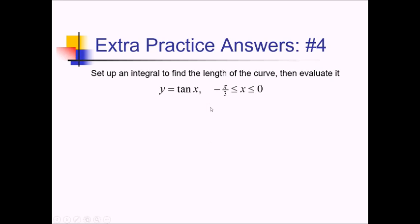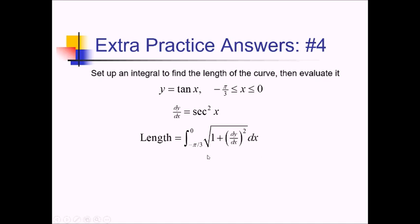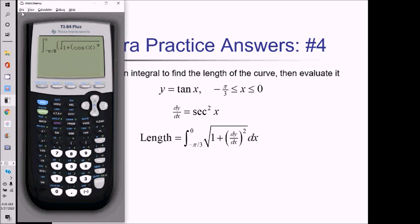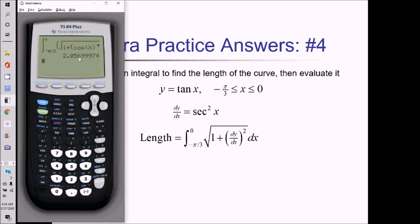On this problem, they want an integral and then the actual value of the length of this curve. So first let me get my derivative dy over dx, which is going to be secant squared of x. Now for the integral, I have the integral from negative pi over 3 to 0 of the square root of 1 plus dy over dx squared, dx. To enter this on the calculator, secant squared is cosine to the negative 2, and then I square that whole expression for dy over dx squared. That comes out to about 2.057.